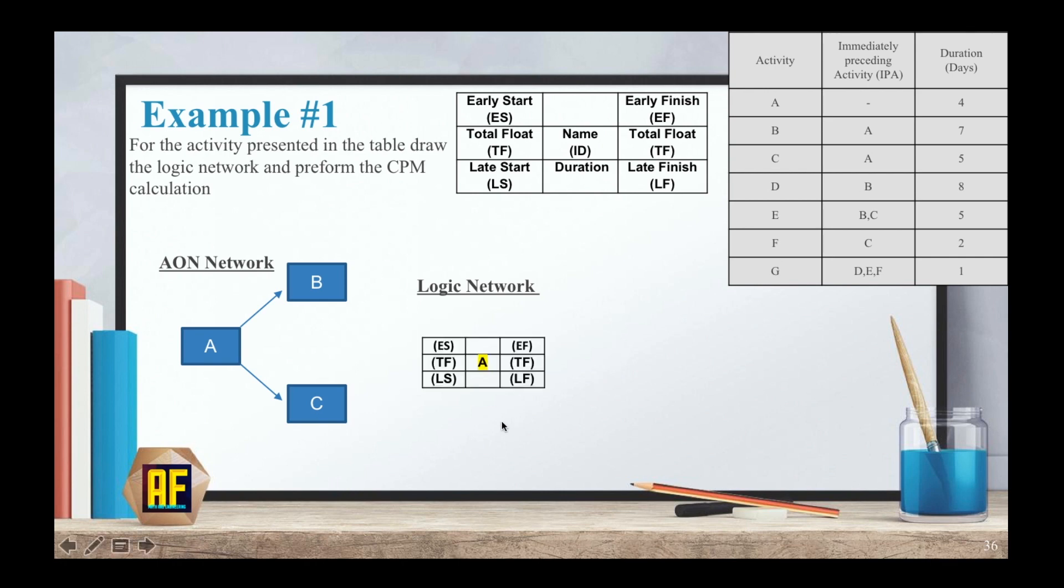So a logic network, we take the same A and we write it over here. And here we write the early start, total floats, late start, early finish, total floats, and late. And we start by writing what we know. We know that the early start is zero because A is our first activity. So that is our early start. The duration of the activity is four. So zero plus four equals EF, equals the early finish. The earliest this activity could start is after four days.